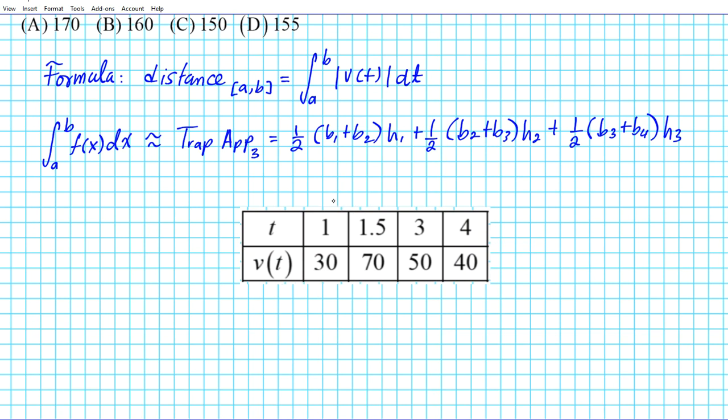So from t1 to t2, this right here is going to be height one, which is as you can see zero point five. We're going to use fractions here since this is a non-calculator question.